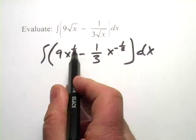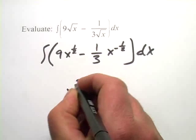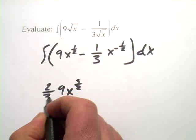So remember, we increase the exponent by 1, so this would be x to the 3 halves. We've got our constant out here, and then we multiply by the reciprocal, so times 2 thirds there.